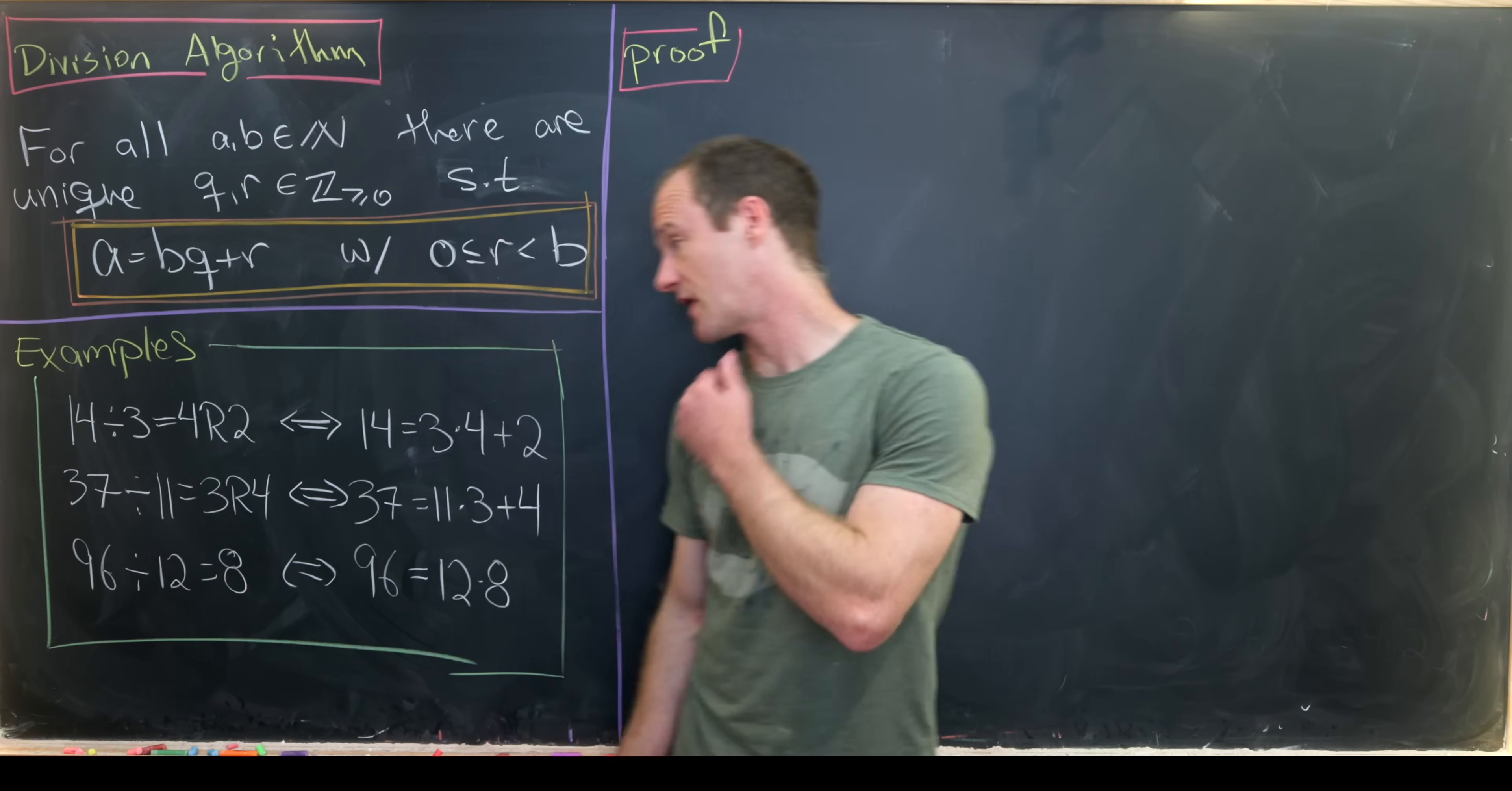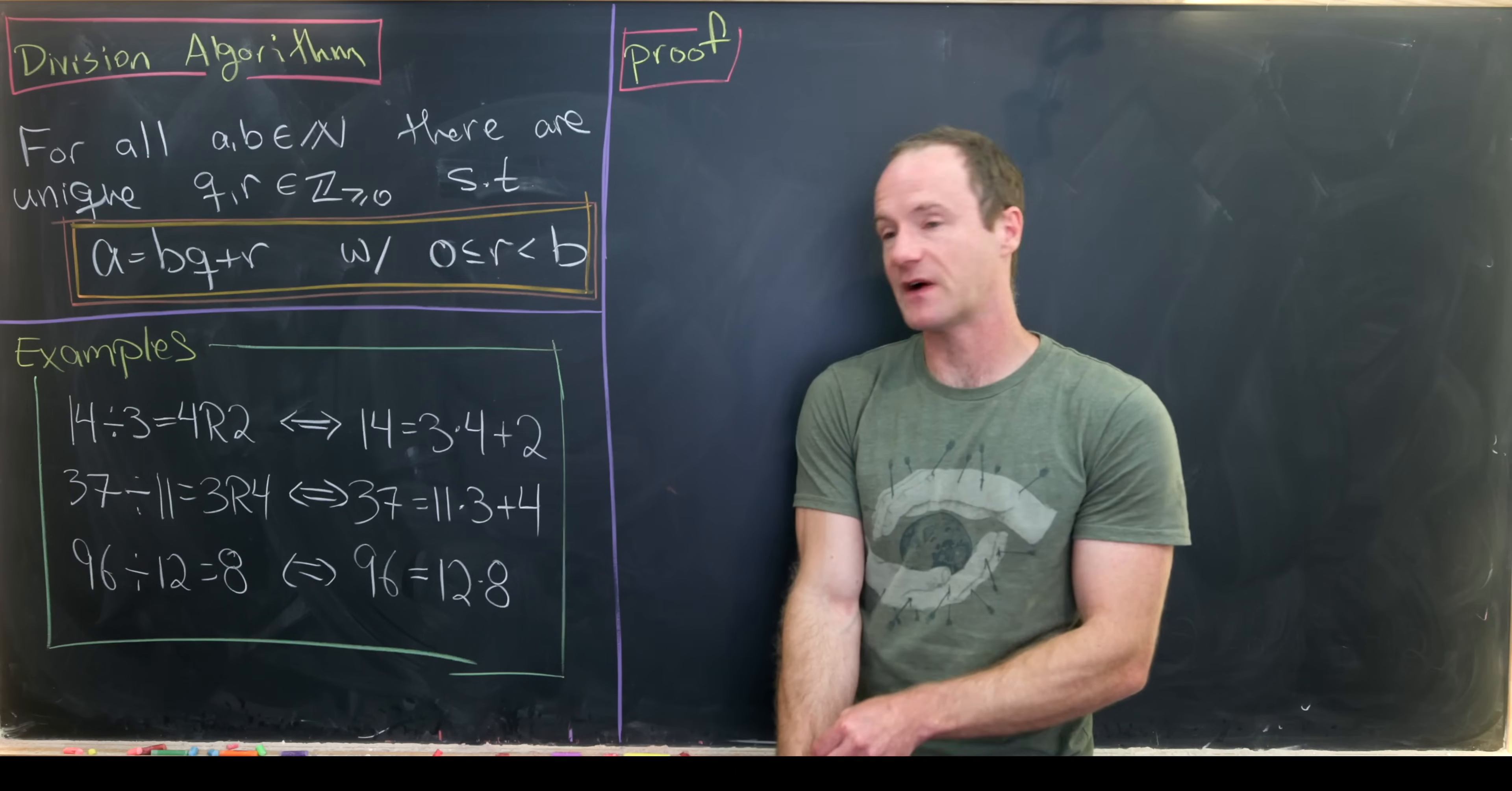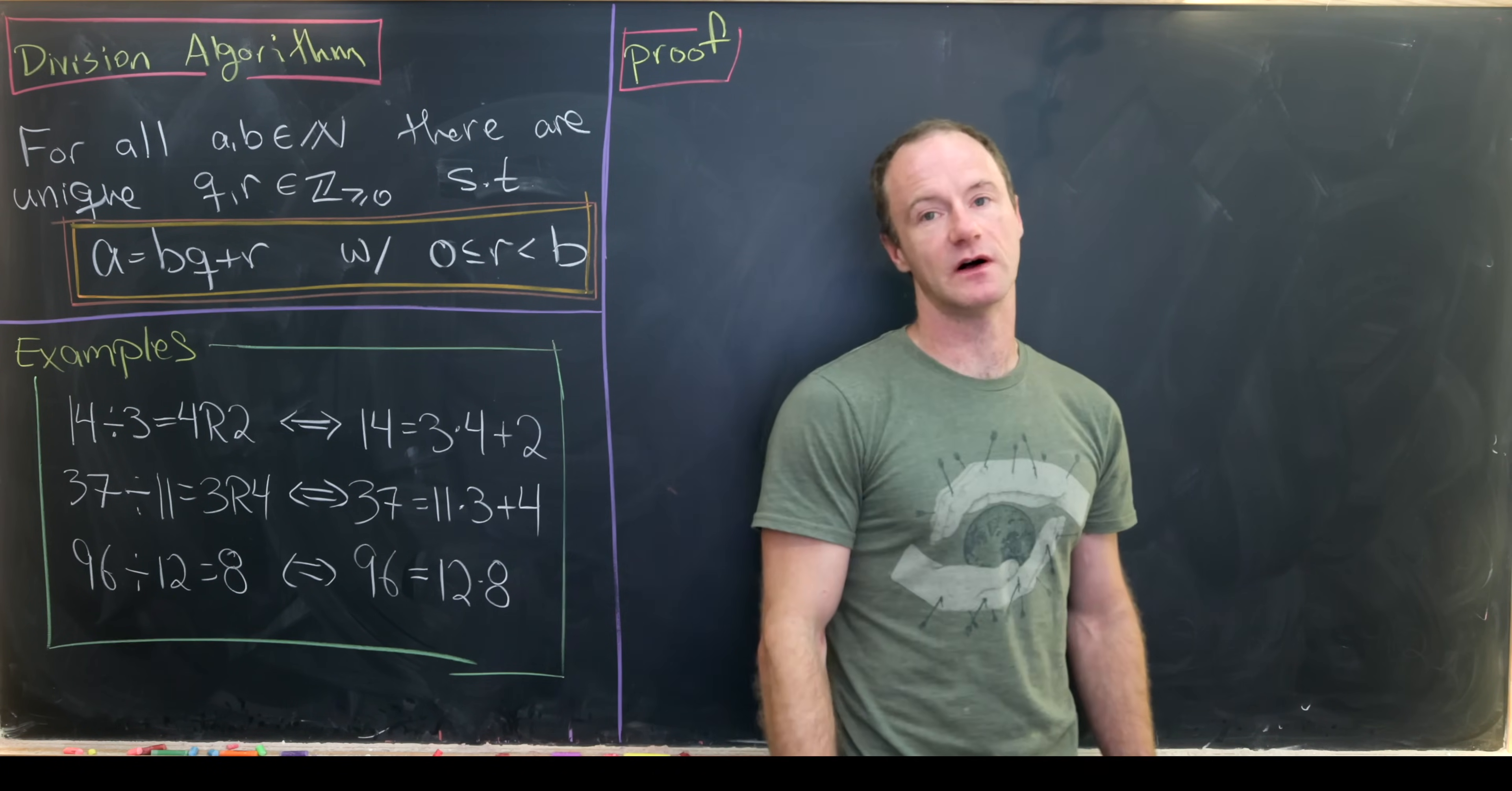Next, 37 divided by 11 is 3 remainder 4. That's because 37 is 11 times 3 plus 4. And then finally 96 divided by 12 is just plain old 8, remainder 0 trivially. That's because 96 is 12 times 8.